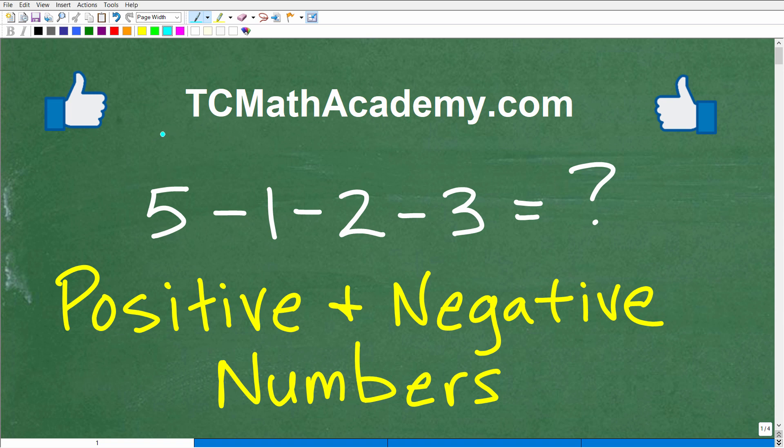Hello, this is John from TC Math Academy, and in this video we're going to do a simple math problem that involves positive and negative numbers. So here is the problem. We have 5 minus 1, minus 2, minus 3. What is this equal to?